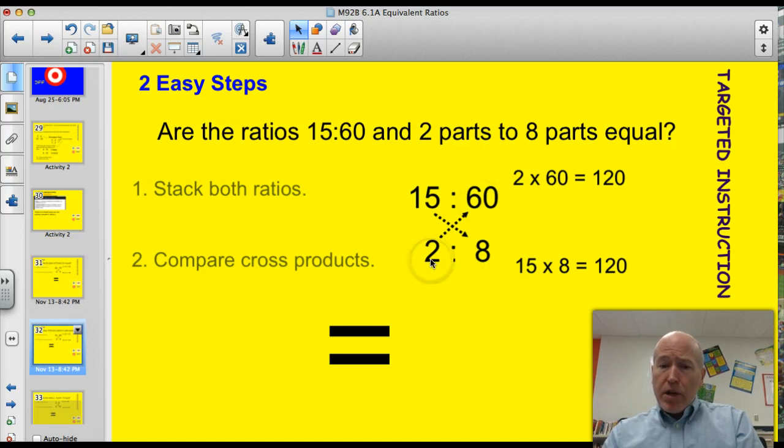So multiply across here. 2 times 60, that gives me 120. And 15 times 8 equals 120. Now you're going to be able to use your calculator on this target, so this should be really straightforward and easy for everyone. 120 and 120 are equal. So once again, these two ratios are equal or equivalent.